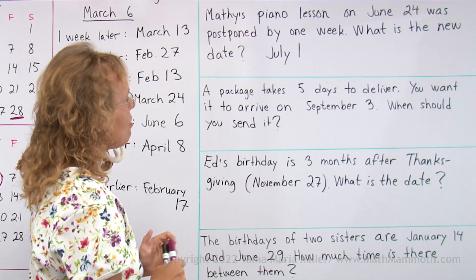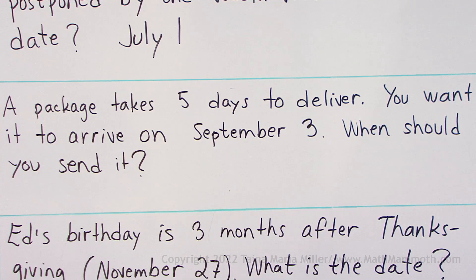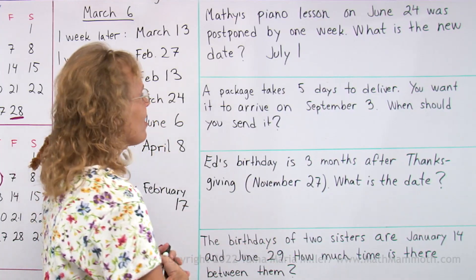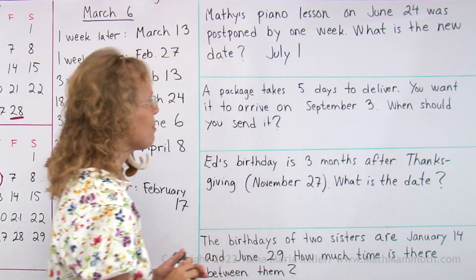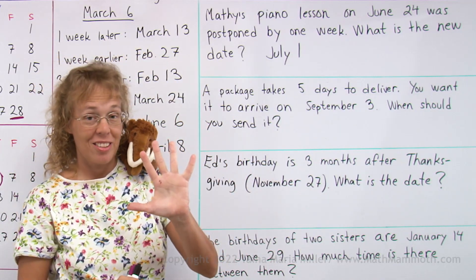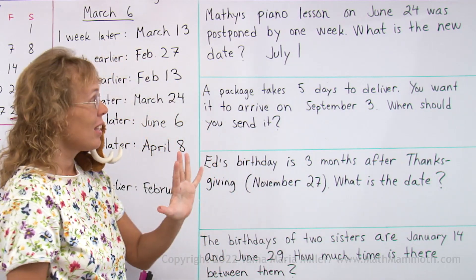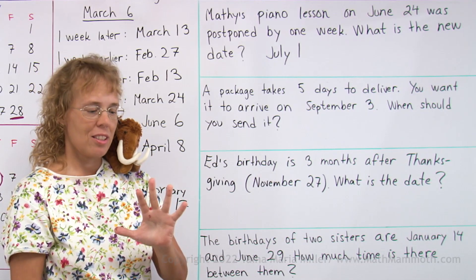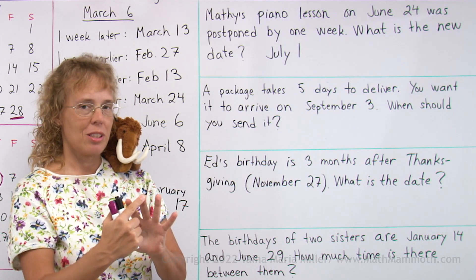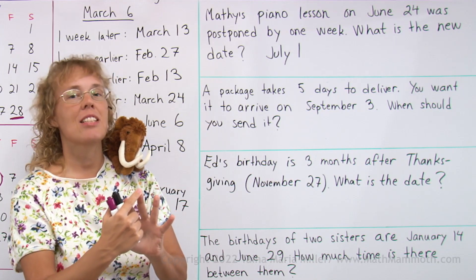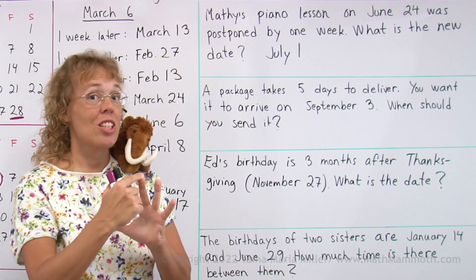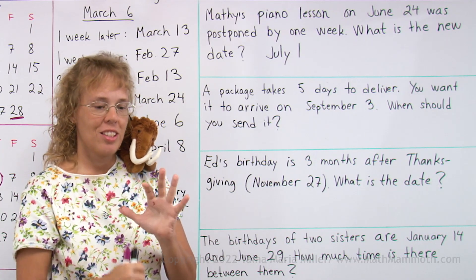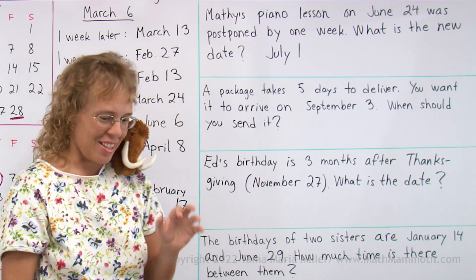A package takes five days to deliver and you want it to arrive on September 3rd. When should you send it? Five days earlier than September 3rd — let's use our five fingers and count backwards. We would have September 2nd, September 1st, and then August what? What's the last day of August? August 31st, August 30th, and then August 29th.